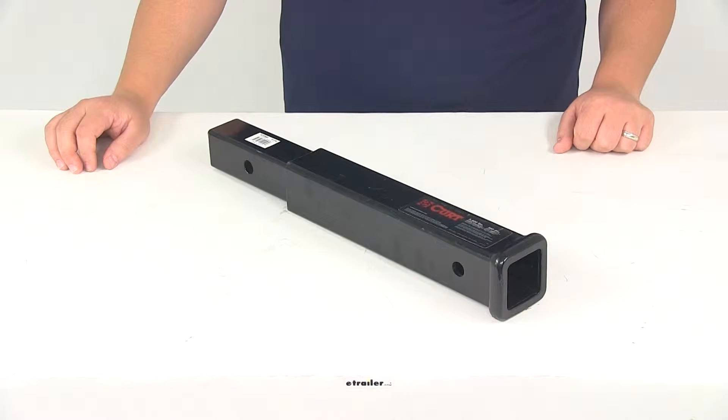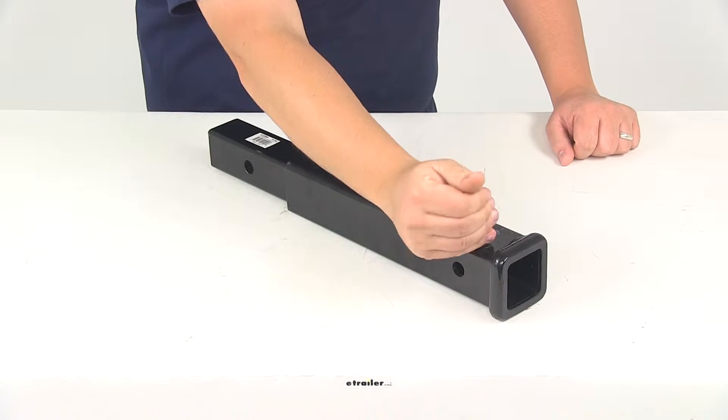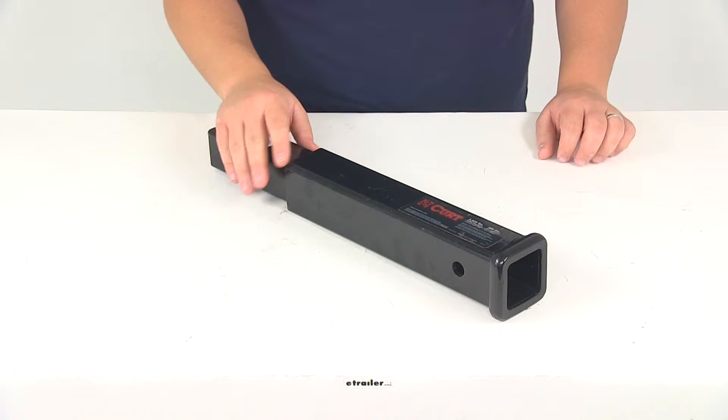Today we're going to be taking a look at part number C45795. This is the Curt hitch extender for 2-inch trailer hitches. It's going to extend your trailer hitch receiver opening out from the rear of your vehicle to help avoid obstacles.